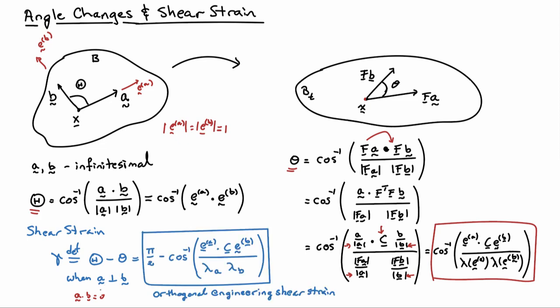If I plug in for A and B being orthogonal, capital theta is 90 degrees, so it's pi over 2. Then, I can bring over my other relationship here for little theta. I'll get minus the arc cosine of EA dotted with C EB divided by the stretch in the A direction or the EA direction and the stretch in the B direction. Sometimes, you'll also see this formula referred to as the orthogonal engineering shear strain. Those are all synonyms to each other.